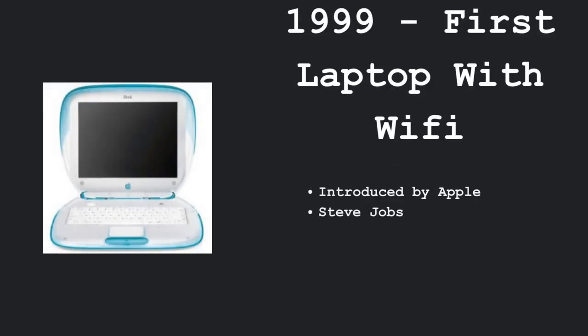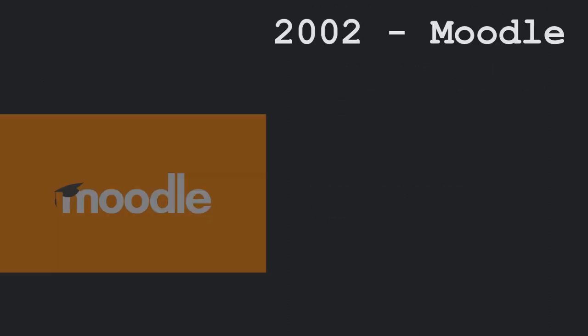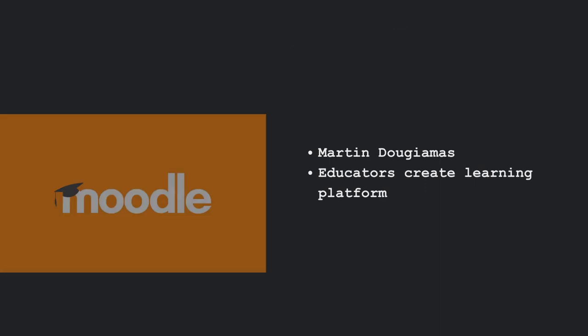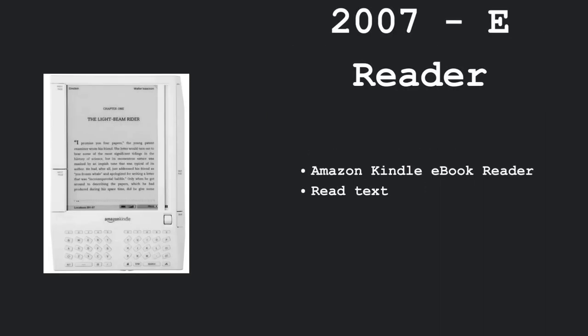In 1999, the first laptop with Wi-Fi was invented and it was introduced by Apple and Steve Jobs demonstrated how it worked. In 2002, Moodle was invented by Martin Dougiamas and it allowed educators to create their own learning platform. In 2007, the e-reader was invented which allowed for the text on your screen to be read to you, and Amazon introduced the Kindle e-book reader which did just that.